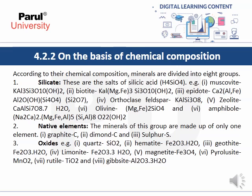The second group is native elements — minerals of this group are made of only one element, such as graphite, diamond, and sulfur. The third group is oxides — examples are quartz, hematite, goethite, limonite, magnetite, pyrolusite, rutile, and gibbsite — representing iron oxide, manganese oxide, titanium oxide, and aluminum oxide respectively.